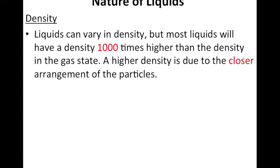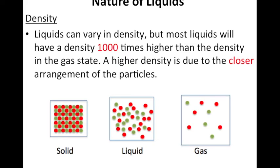So the first property of liquids is its density. Liquids can vary in density, but most liquids have a density a thousand times higher than the density of a gas. A higher density is due to the closer arrangement of the particles. So this is the same image we looked at when we talked about the density of gases. And you can see that liquids fall in between a solid and a gas.